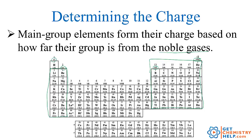When it's one of these elements, they're going to form a charge based on how far their group is away from the noble gases. The noble gases are in this column right here — helium, neon, argon, krypton, xenon, and radon. All of these main group elements, 1A, 2A, then 3A through 8A, form a charge based on how far away they are from this group.